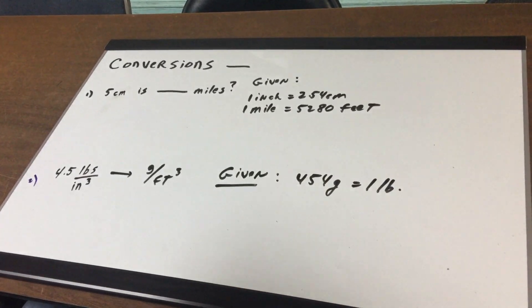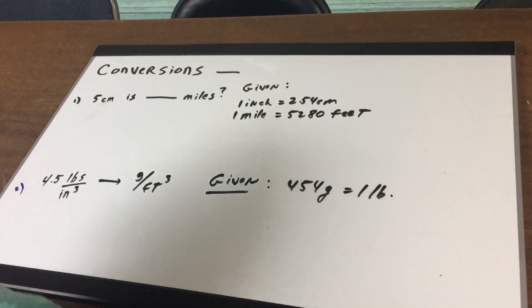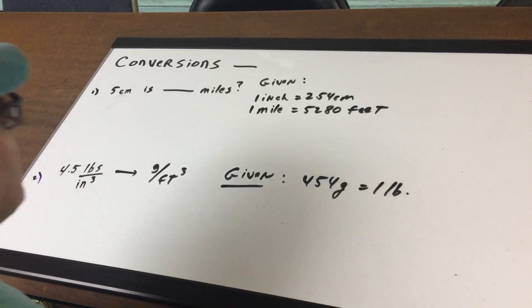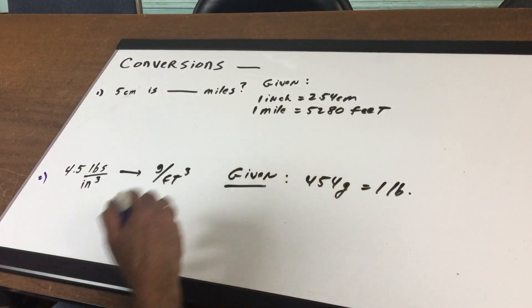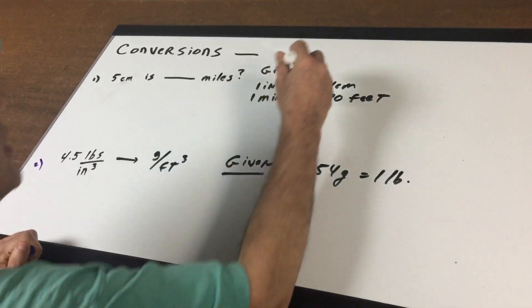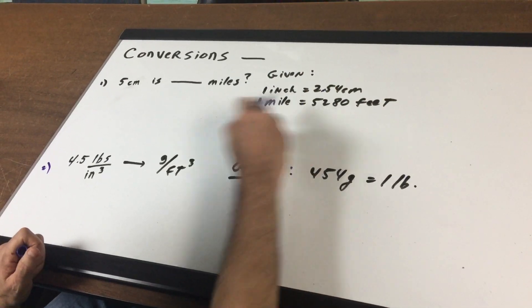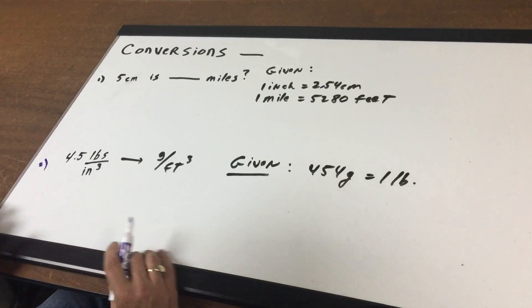What I want to do is convert 5 centimeters into miles. Now we know this is going to be a small number but I give you that an inch is 2.54 centimeters. And one mile is 5280 feet.